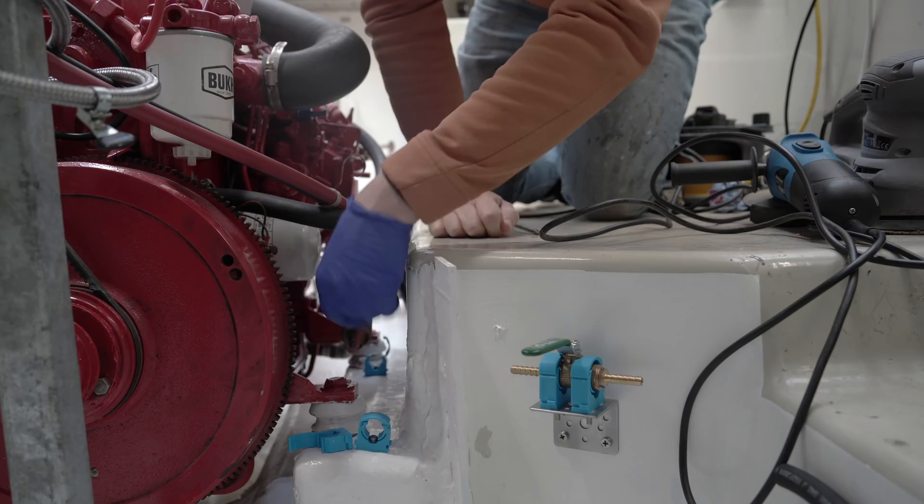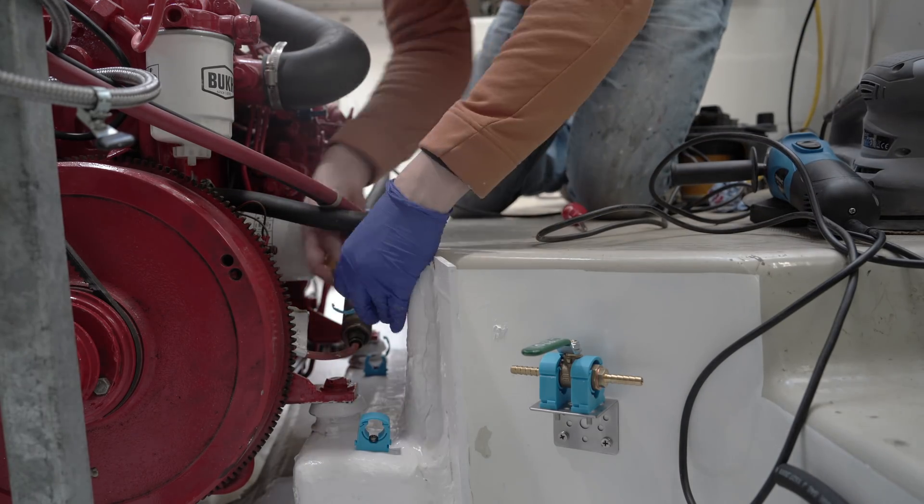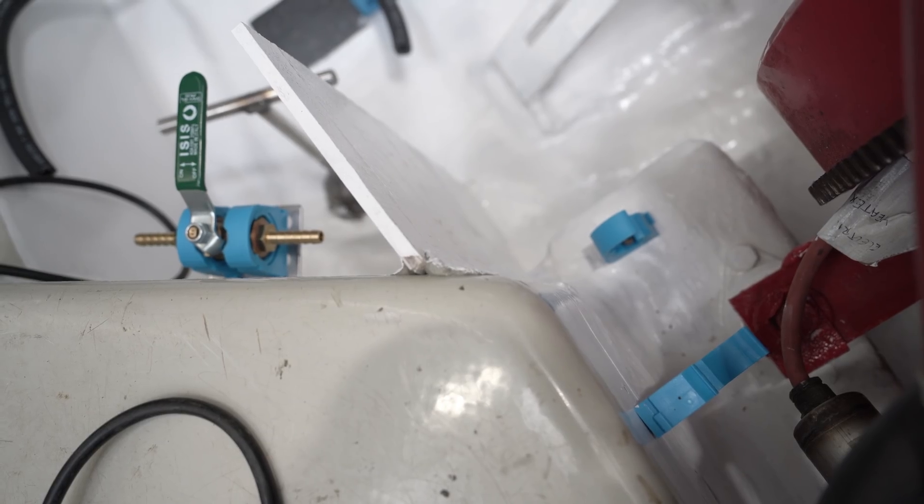To run the fuel hoses from the fuel tank to the water separator and then the engine, plus the diesel return fuel line back to the tank, I've used more of these Talon clips located along the side of the engine bay.